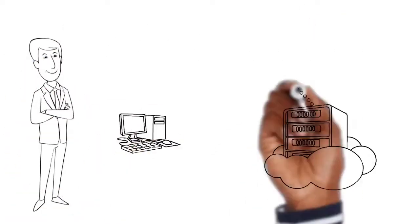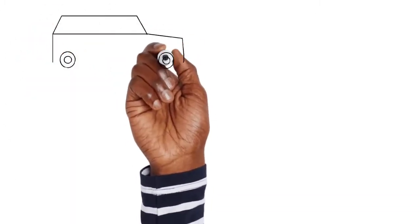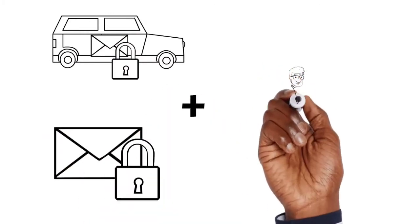This is where Confidential Cloud Computing comes into play. Confidential Cloud Computing describes a process of locking down data while it's in transit, at rest, and in use.